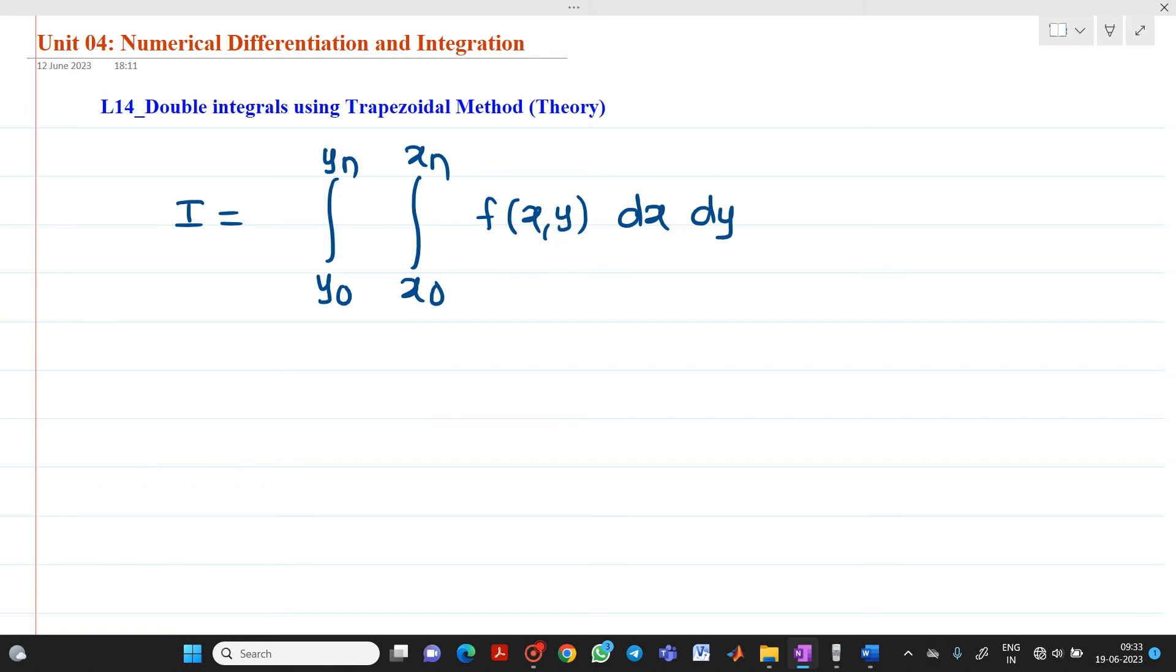Here if you see, as we have this first dx here, therefore these limits will be x0 to xn. After that we have dy, so therefore these limits will be y0 to yn. Now let us consider that spacing between x is denoted by h and spacing between y is denoted by k.